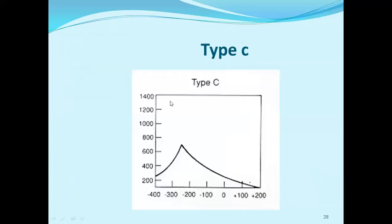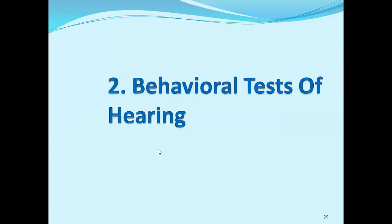Type C is not a flat graph, but the location of the peak is shifted to a different position. This means that there is also a problem present.